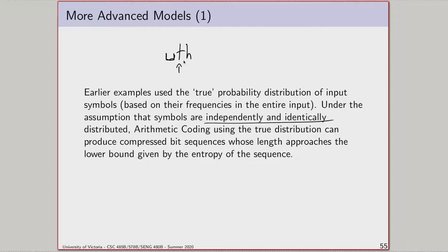We could design a scheme that deliberately modifies probabilities based on observed dependencies. After seeing the letter T, we could significantly amplify the probability that the next character is H, giving H a shorter encoding. Similarly, in English text, if you see the letter Q, the probability that the next character is U is extremely high — much higher than the overall probability of U in general text. Having the ability to modify the distribution gives us much more power than standard entropy coding with the independence assumption.